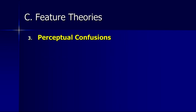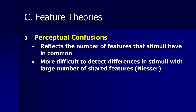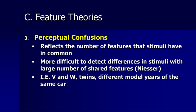There are some central predictions of feature theories, one of which is what we call perceptual confusions. This simply reflects the number of features that stimuli have in common — the more features in common, the greater the confusion. It's more difficult to detect differences in stimuli with a large number of shared features. There's a classic experiment by Ulrich Neisser in which participants searched for items in an array of other items that were either very similar or very different. We have a demonstration for you to do in class that will demonstrate this particular phenomenon, so this is a good time to go do that and come back to this lecture.